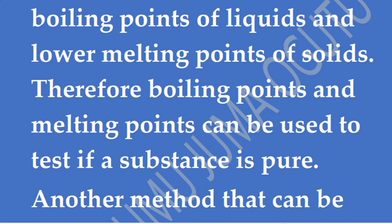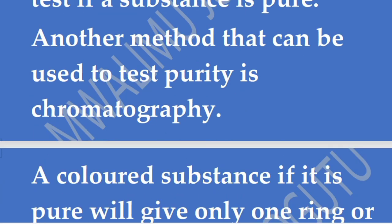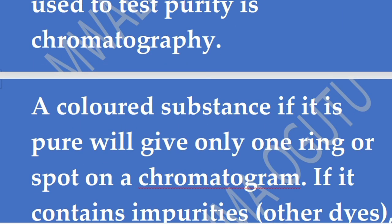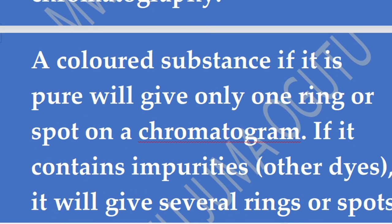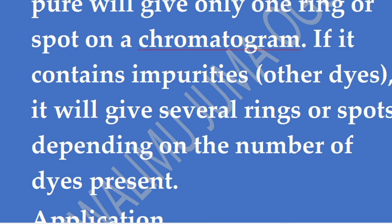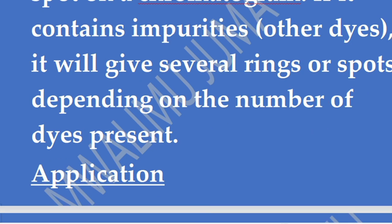Another method used to test purity is chromatography. A colored substance, if pure, will give only one ring or spot on a chromatogram. If it contains impurities or other dyes, it will give several rings or spots depending on the number of dyes present. Chromatography can be used to determine the purity of mostly colored substances or colored dyes.